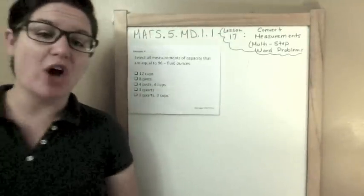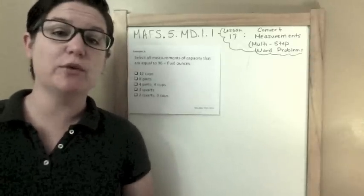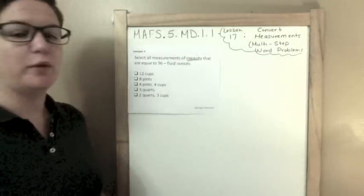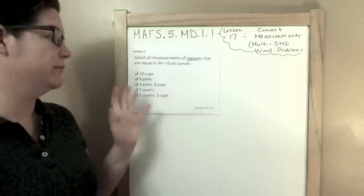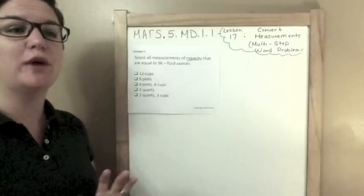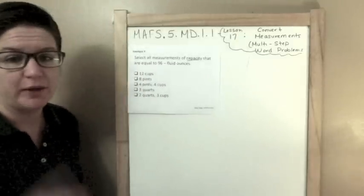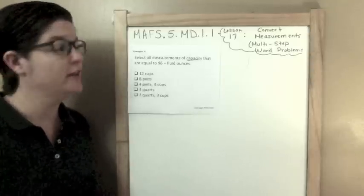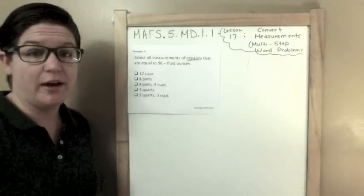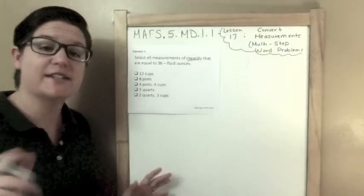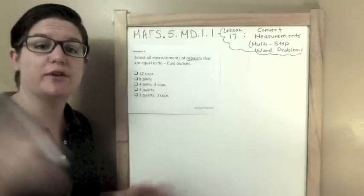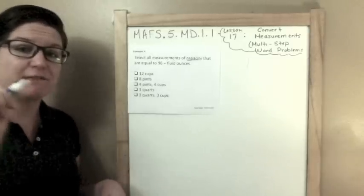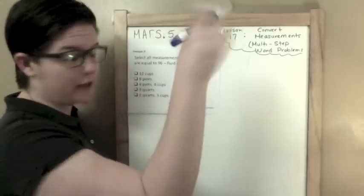Example three: select all the measurements of capacity that are equal to 96 fluid ounces. When talking about capacity — gallons, cups, pints — we're going to use something you should write on your FSA answer sheet. This is a test tip: as soon as you begin your FSA math test, you're going to have that reference sheet. You'll also get a scratch piece of paper. As soon as you begin the test, this is the very first thing I want you to do — just get it out of your brain and onto paper.